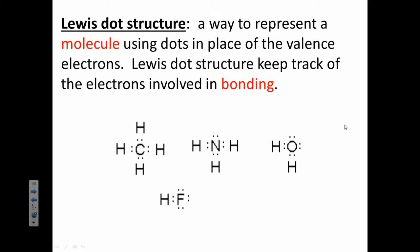A Lewis dot structure is basically showing a molecule with dots instead of the electrons, the valence electrons, and ones that are between atoms are actually showing the shared electrons, the ones that are involved in bonding.